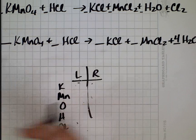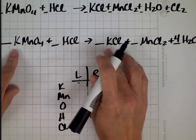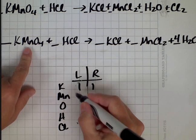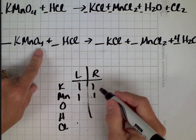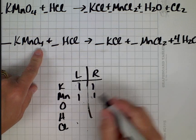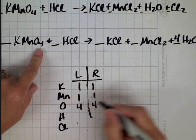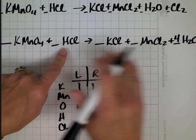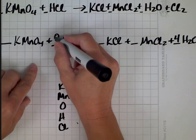So let's start this again. Potassium on the left and right? Still one. Manganese on the left and the right? Still one. Oxygen on the left? Four. And on the right? Four. That's good. I like that. Hydrogen on the left? One. And on the right? Eight. So I need to make this eight. I'm going to put a little eight here. Eight hydrogens, eight hydrogens.